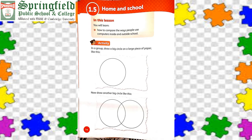One circle belongs to people using computers inside school, and the second circle is for people using computers outside school. In this way you can easily see how computers help inside and outside school. There is an extra challenge: which pictures fit inside the middle of the circles? If we merge both circles, what comes in the middle? Those are the things we can use a computer for both inside and outside school.